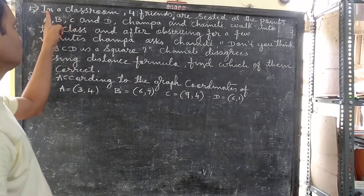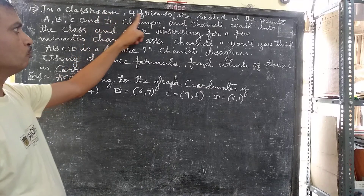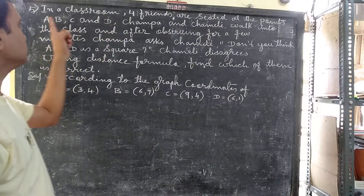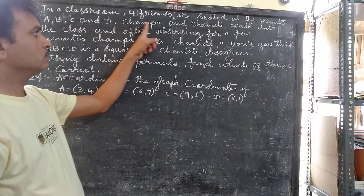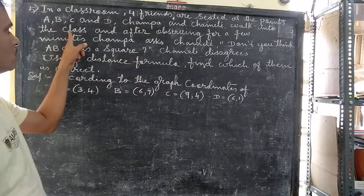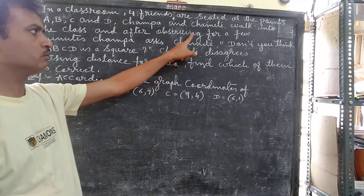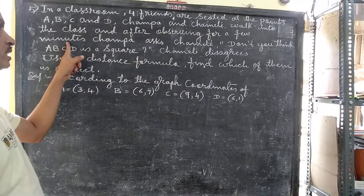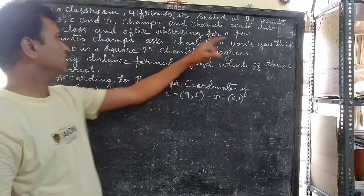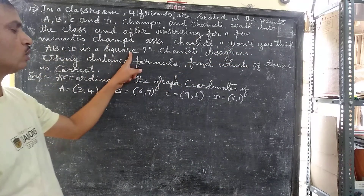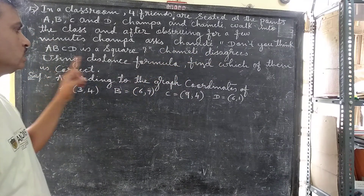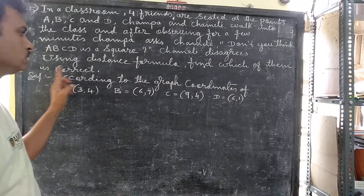Question number 5. In a classroom, four friends are seated at the points A, B, C, and D. Champa and Chameli walk into the class and after observing for a few minutes, Champa asks Chameli, 'Don't you think A, B, C, D is a square?' Chameli disagrees. Using the distance formula, find which of them is correct.